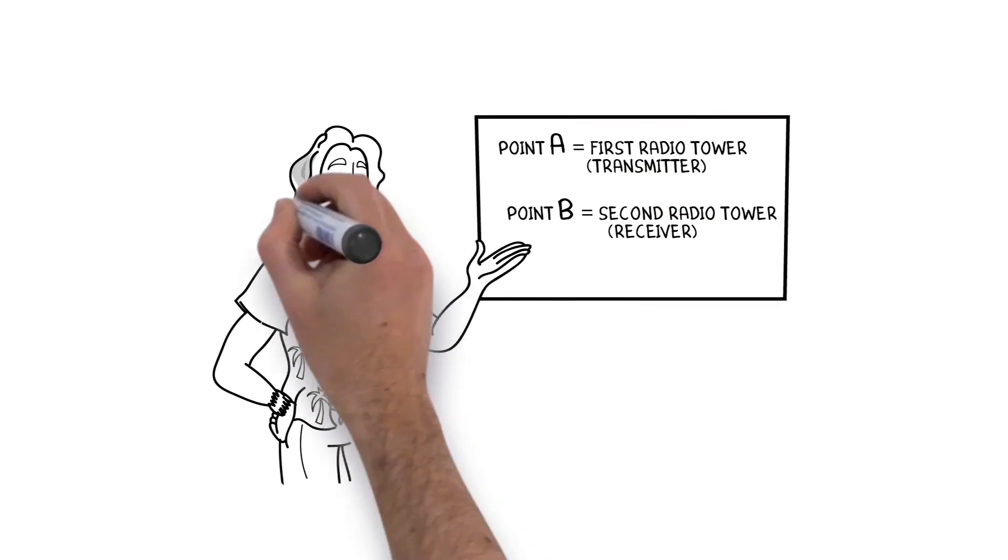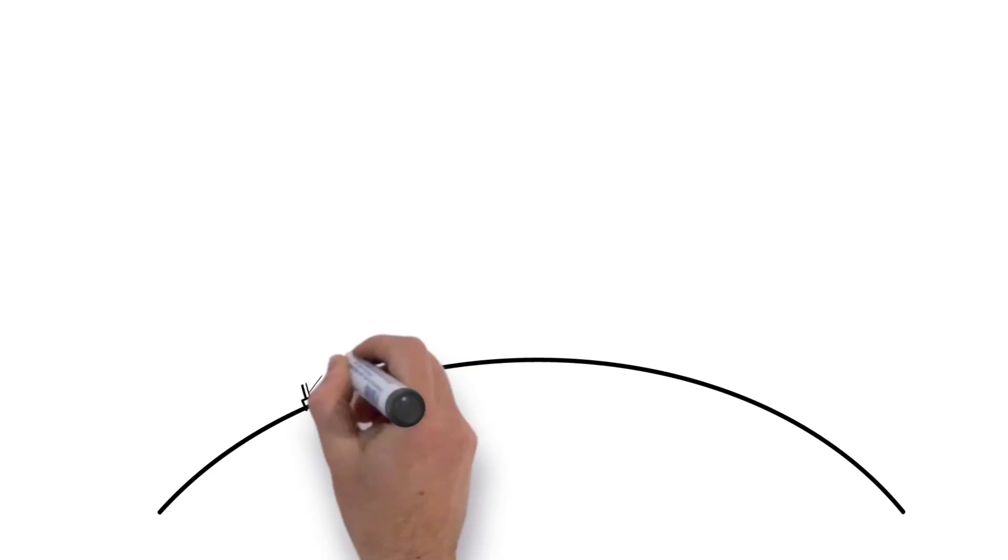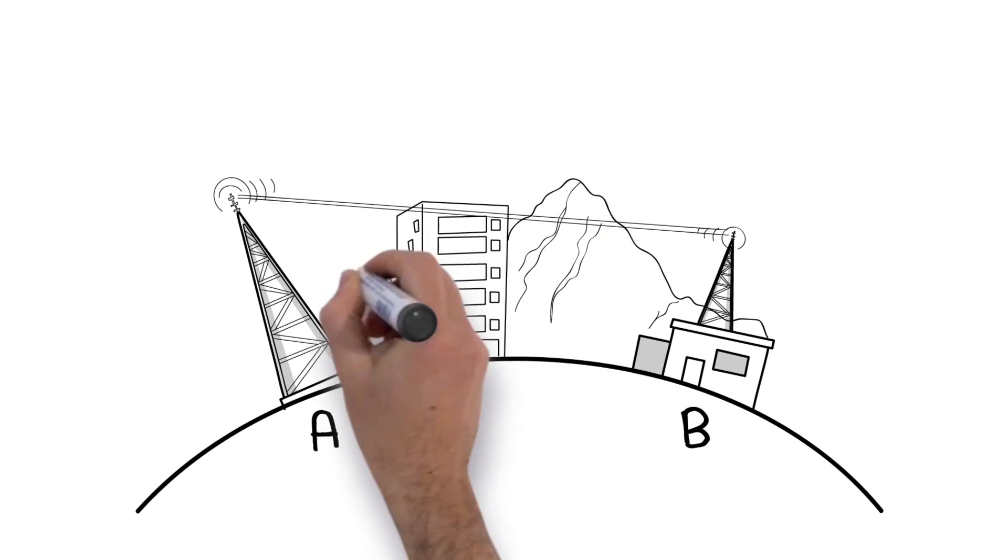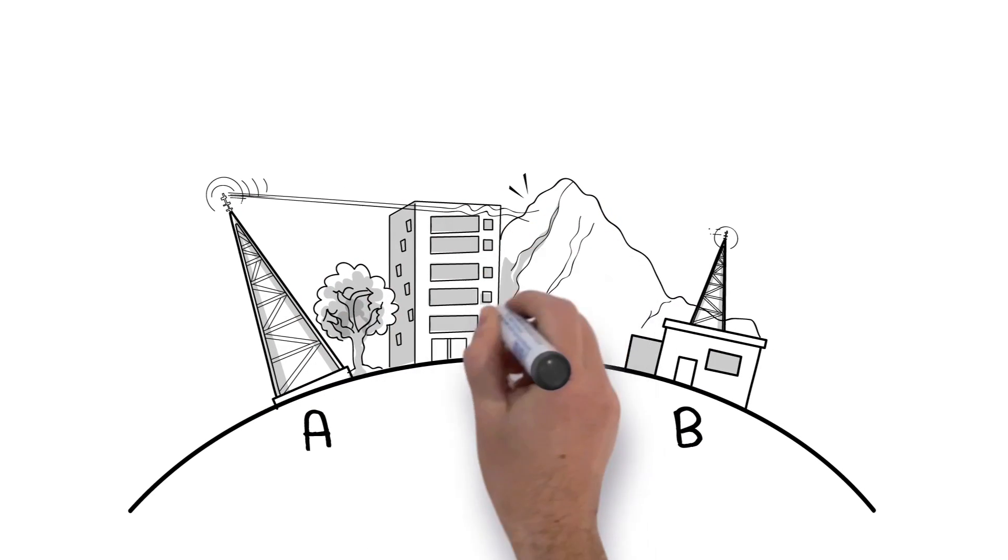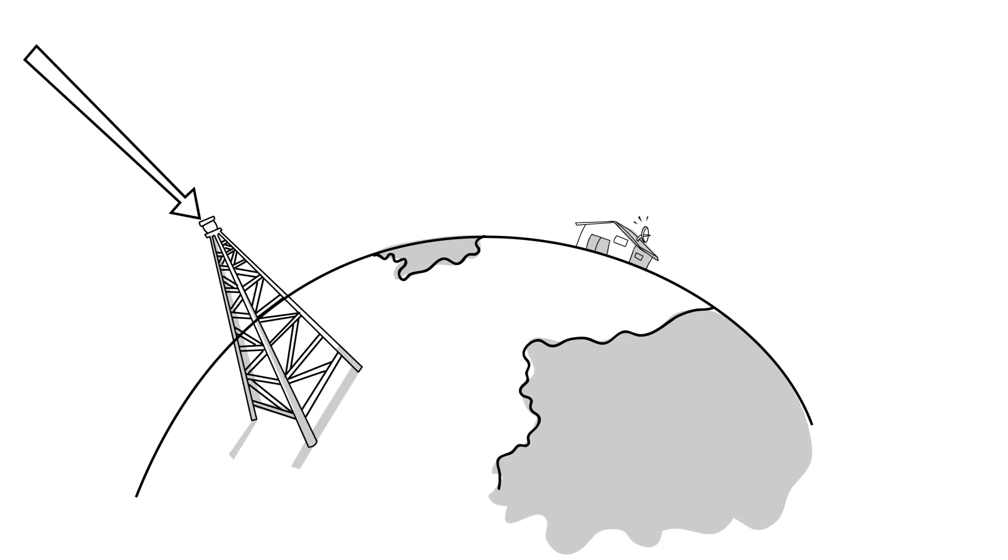In layman's terms, line-of-sight means that your transmitter and receiver can see each other. High-frequency radio waves travel like light does to your eye, which means there cannot be obstructions in the way such as mountains, buildings, trees, tunnel walls, or especially as the distance between radios increases, the curvature of the earth.